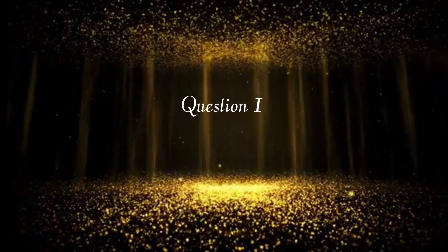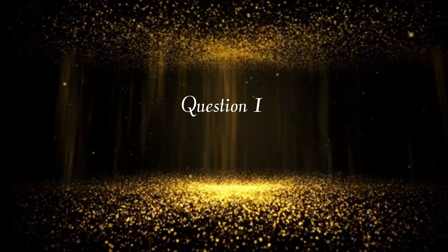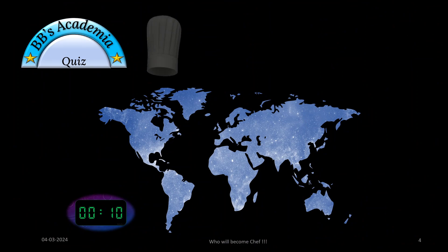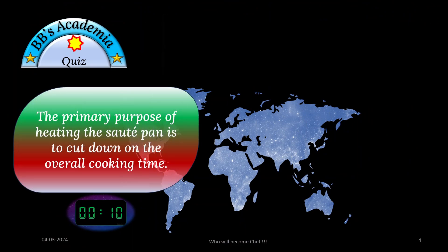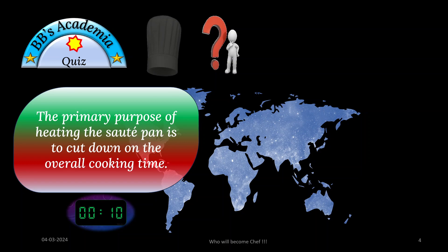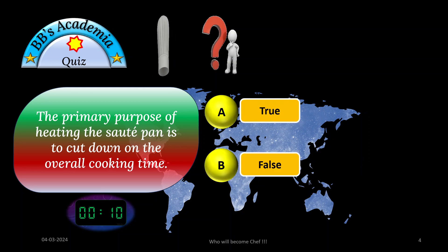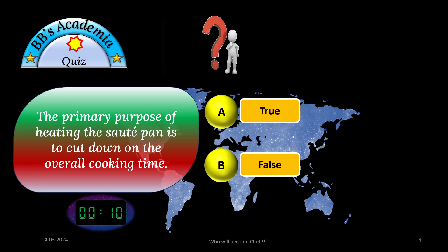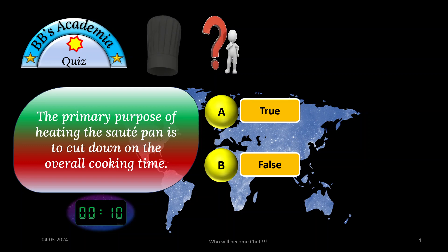Here is question number one on your screen now. The question is a very simple basic question: the primary purpose of heating the sauté pan is to cut down on the overall cooking time. You have to find out whether this statement is true or false. You will be getting 10 seconds to think and answer accordingly. Your time starts now.